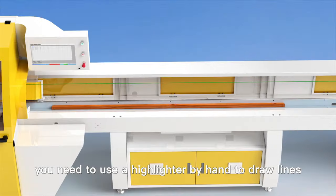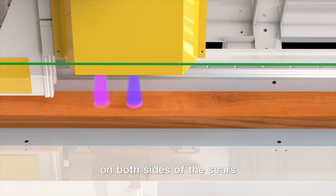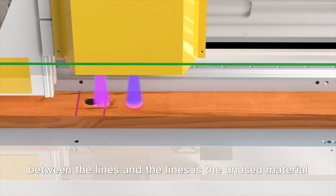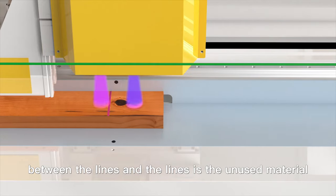If there are markings on the wood, you need to use a highlighter by hand and draw lines on both sides of the markings. The position between the lines is unused material.